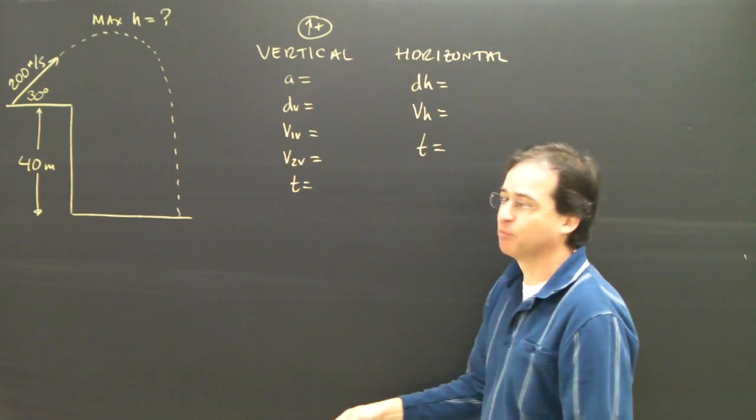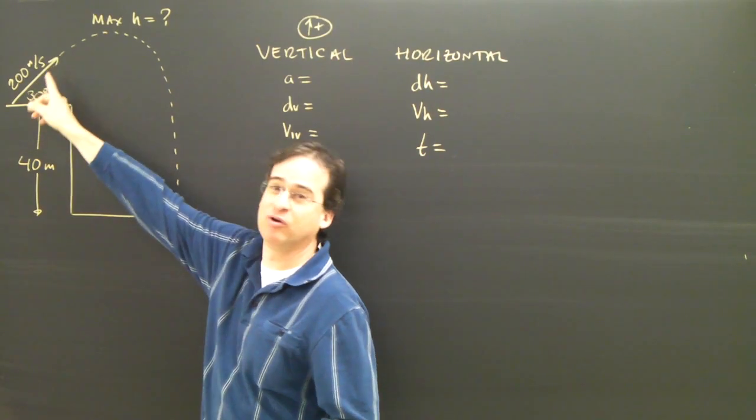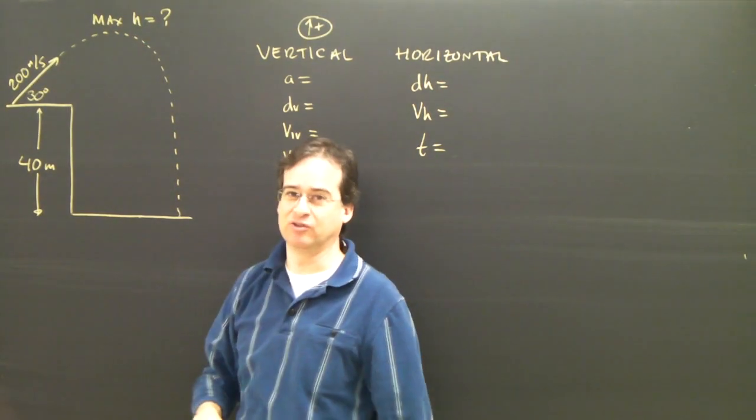In this projectile problem, what we're looking for is when we project something off of a building at 200 meters per second, what's the maximum height it's going to travel?